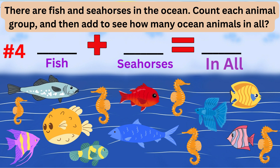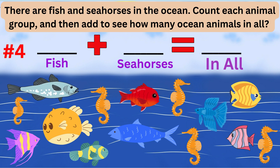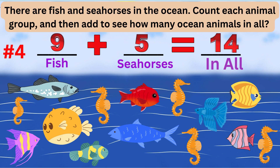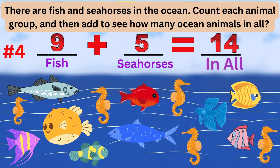Word problem number four: there are fish and seahorses in the ocean. Count each animal group and then add to see how many ocean animals in all. After counting, there are nine fish and five seahorses. When you add them together, the answer is 14 ocean animals in all. The number sentence is 9 plus 5 equals 14.